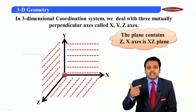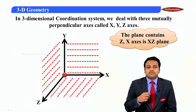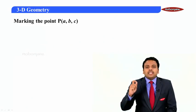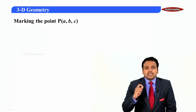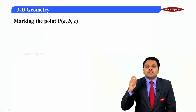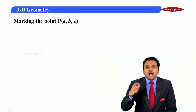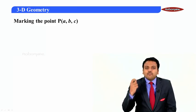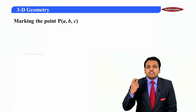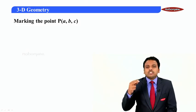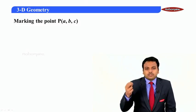We have planes, coordinate axes, and our origin. Our next concept is marking a point (a, b, c). In 2D it is easy to mark (2, 3) or (a, b). In 3D, to mark (a, b, c) we need to follow a procedure. The first procedure is to construct a cuboid.